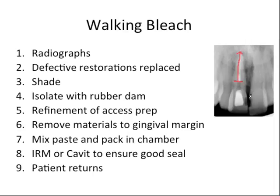If there are defective restorations on this tooth, we need to replace them — for the same logic, we don't want any leaky areas where bleach material can leak out of the tooth. As with any bleaching case, check shade using a special bleaching shade guide and take clinical photos for reference; it's always nice to show the patient progress. Isolate with the rubber dam so the bleaching material isn't leaking everywhere. Sodium perborate is safer than the other materials, but you still want to go through all these steps. Then do an access prep — accessing the pulpal space from the lingual for all these anterior teeth.